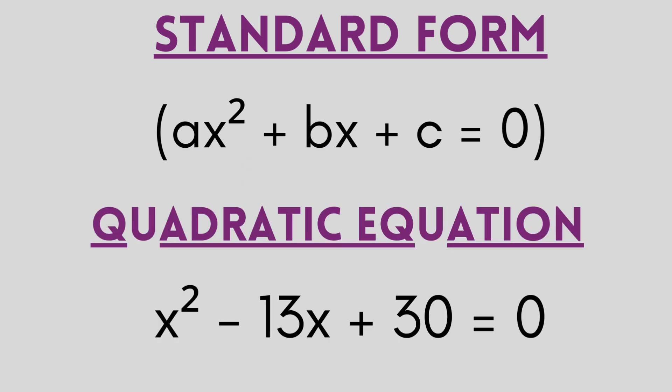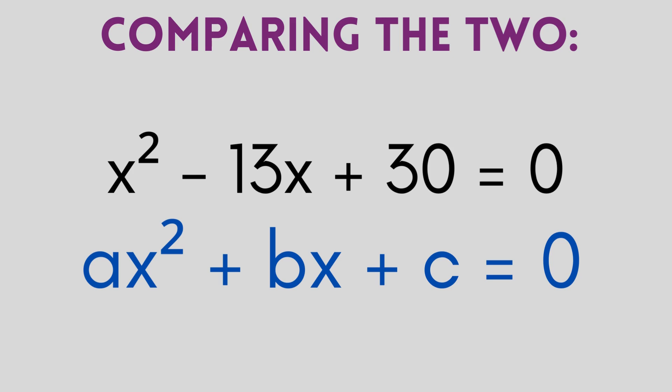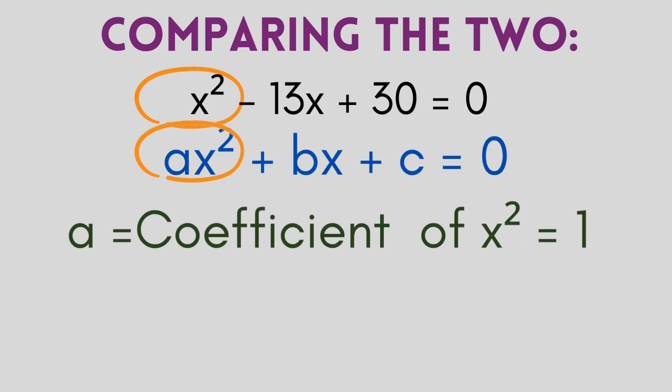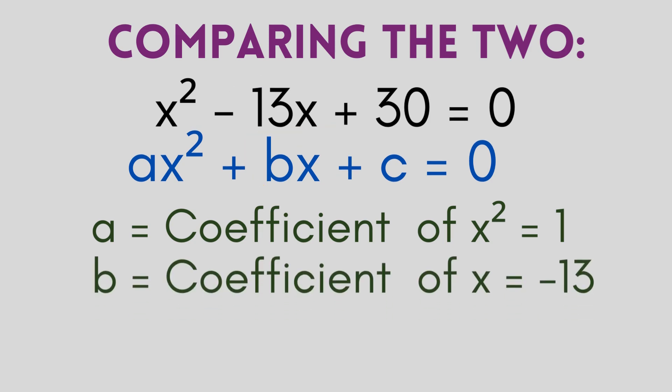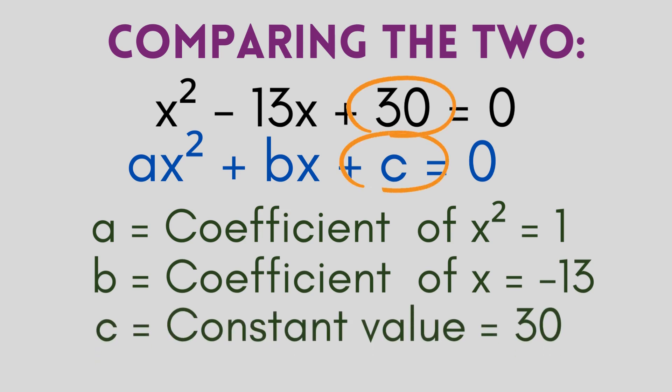Now let us compare the standard form of quadratic equation with the example from before. On comparing the first terms, we see the coefficient of x square, i.e. a from the standard form has the value 1 in this particular example. Similarly, b is the coefficient of x which is equal to minus 13. And c is the constant term having the value 30. Now that we know our a, b and c's, let us move on to solving this equation.